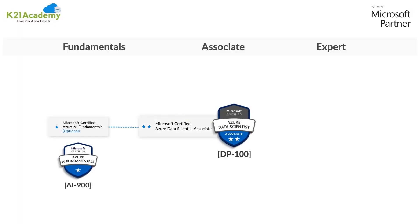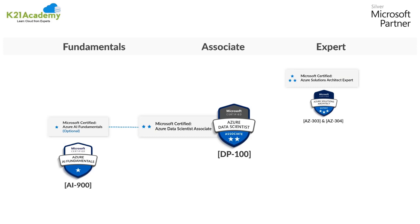DP-100 is a level 2 associate-level certification, applicable for anyone who is working or would like to work on artificial intelligence, data science, machine learning, and everything related to data science. There's another certification, AI-900, which is not a prerequisite for DP-100, but having knowledge of Azure AI fundamentals will help. There are also expert-level certificates targeted towards solution architects or DevOps, which are three-star certifications.